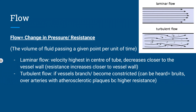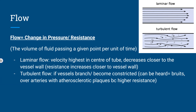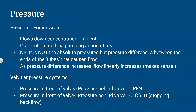You can calculate flow by the change in pressure over resistance. Laminar flow is the healthy flow — velocity is highest in the center of the tube and decreases close to the vessel wall. Turbulent flow occurs when vessels branch and become constricted, increasing resistance and causing complications such as plaque buildup or atherosclerosis. You can actually hear turbulent flow — that's what a bruit is in a cardio OSCE.